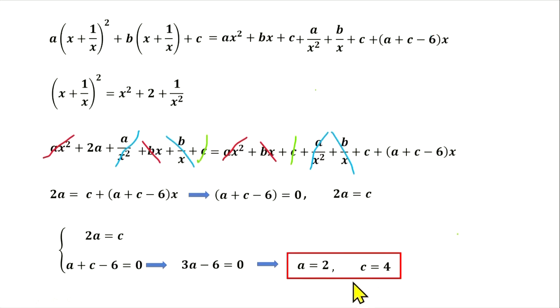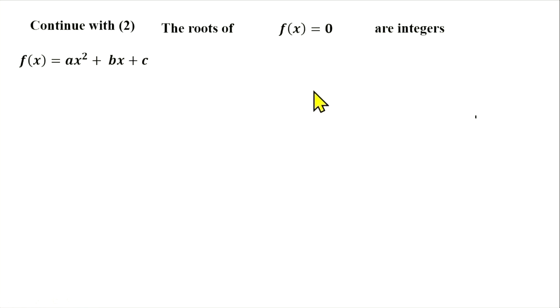What remains is b. To find b, we will continue with property 2. The roots of this equation are integers.